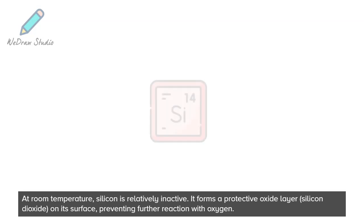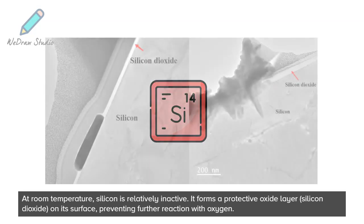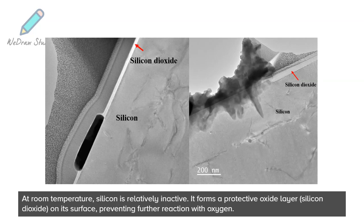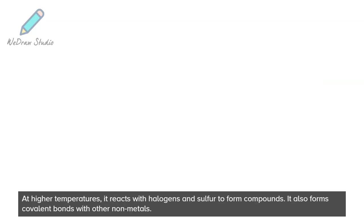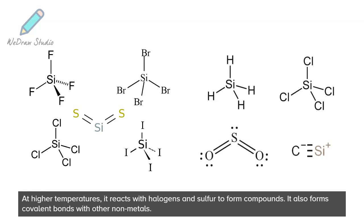At room temperature, silicon is relatively inactive. It forms a protective oxide layer, silicon dioxide, on its surface, preventing further reaction with oxygen. At higher temperatures, it reacts with halogens and sulfur to form compounds. It also forms covalent bonds with other non-metals.